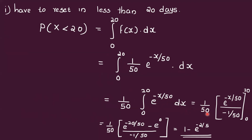Integrating e^(-x/50) gives e^(-x/50) divided by the derivative of (-x/50), which is (-1/50). So the 1/50 constants cancel, and we evaluate from 0 to 20.